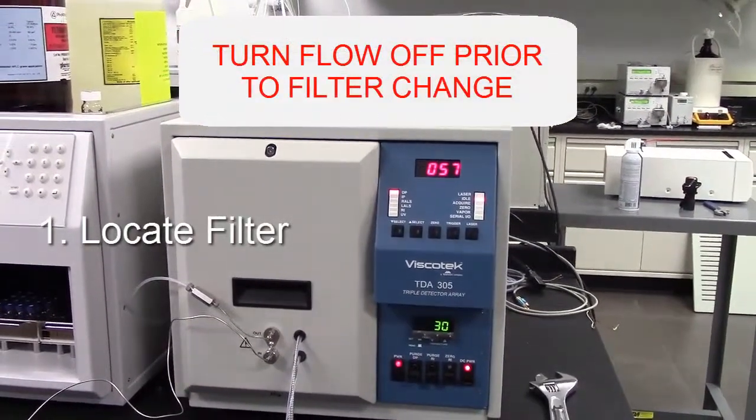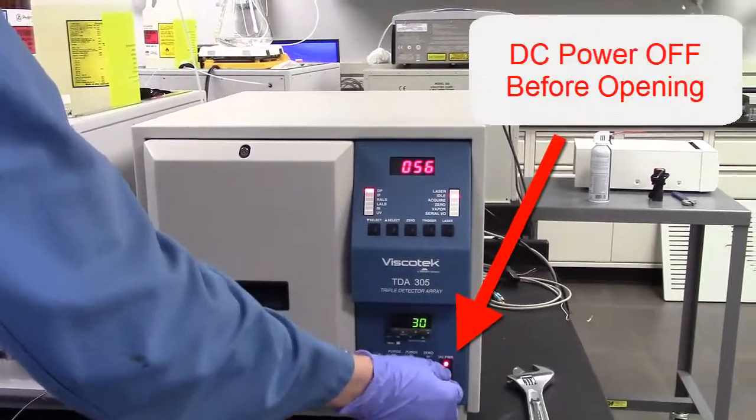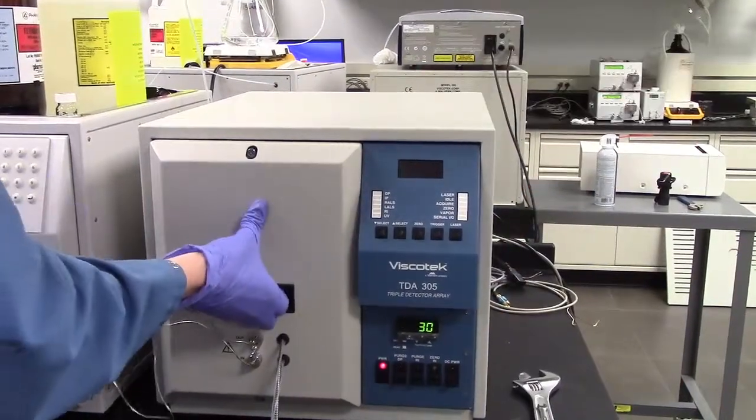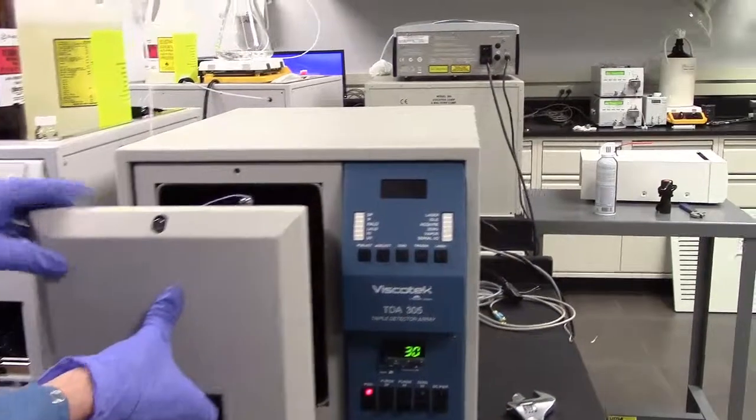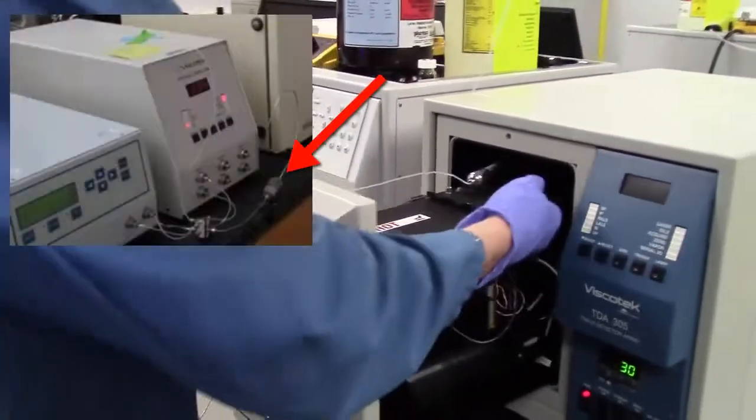When experiencing pressure, noise, or drifting issues, the best place to start is to replace the post-column filter. Remember to turn the flow off before you start and to turn the DC power on the TDA off before opening the unit.